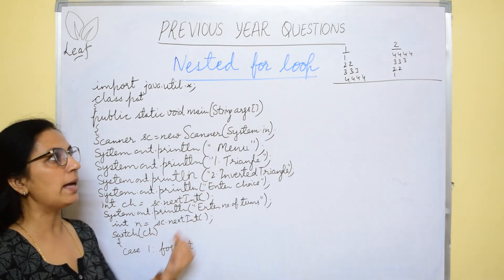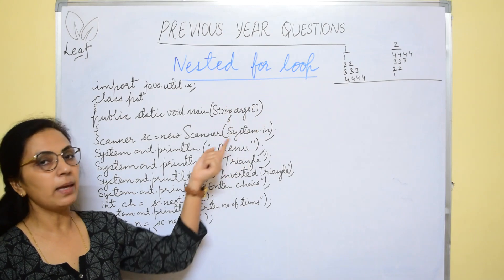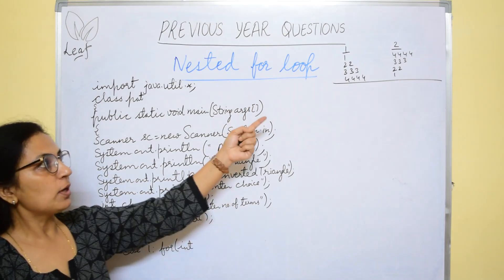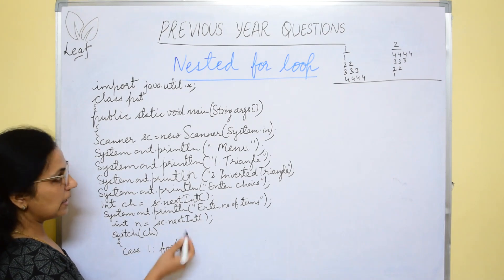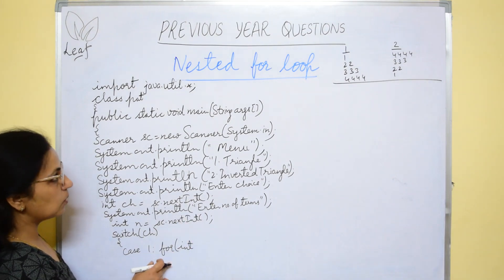If the choice is 1, we have to write the statements for performing first option and if the choice is 2, we will be writing the statements for second pattern. Now case 1.